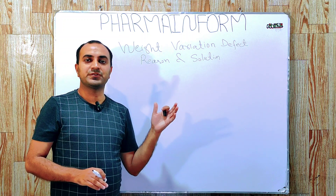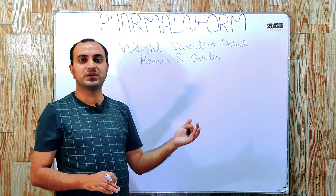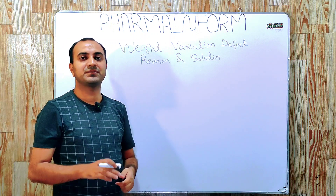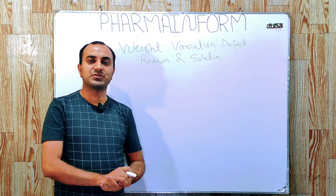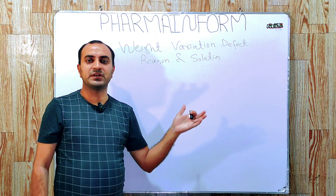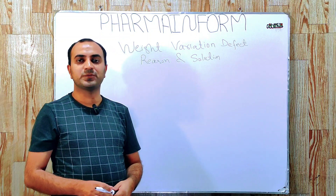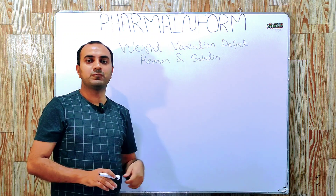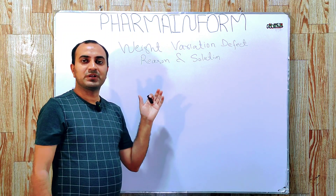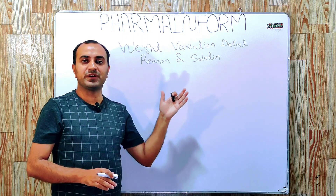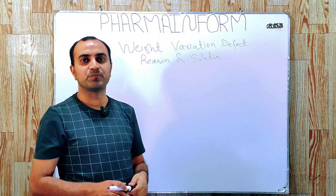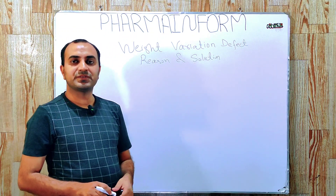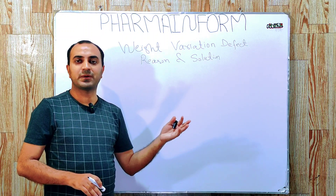In pharmaceutical industries, we have certain standards to meet the weight of tablets. BP and USP have given some ranges for the compression weight. We will record a separate video on the standards of weight variation according to BP and USP. In this video, we will only discuss this defect, its reasons, and its solution.